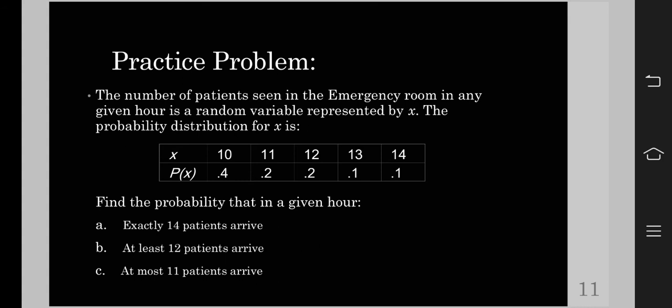For the first one, exactly 14 patients arrive, we're just going to look at the probability that corresponds to 14, and that is 0.1. So the probability that 14 patients will be in the emergency room is 0.1.